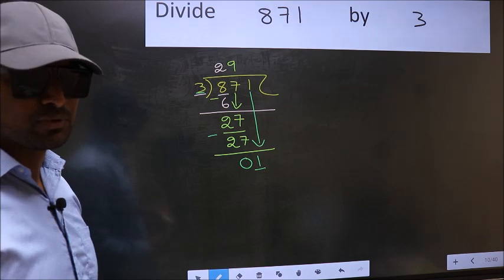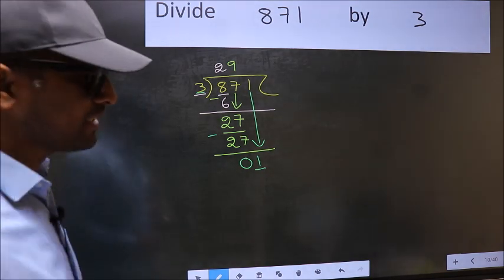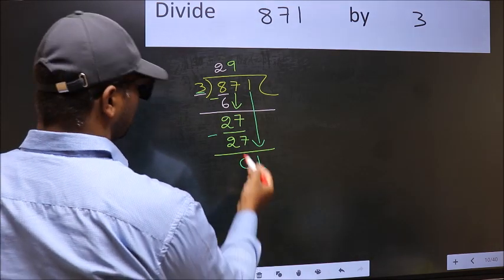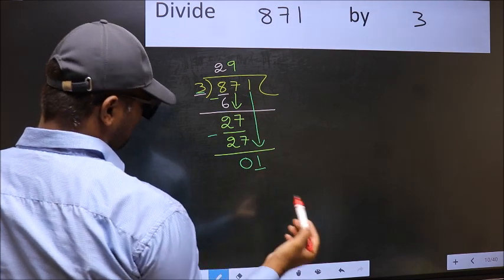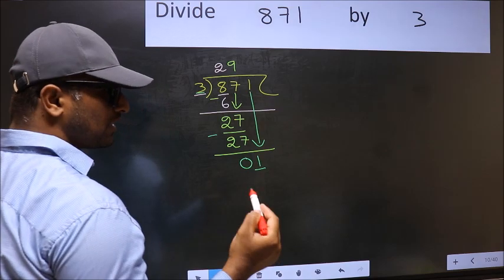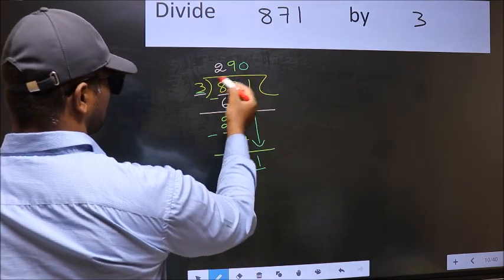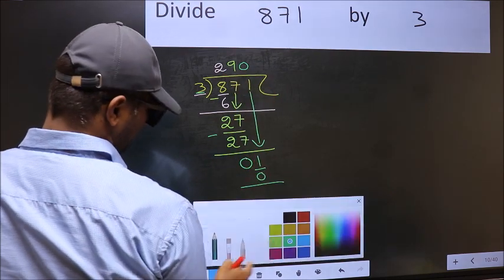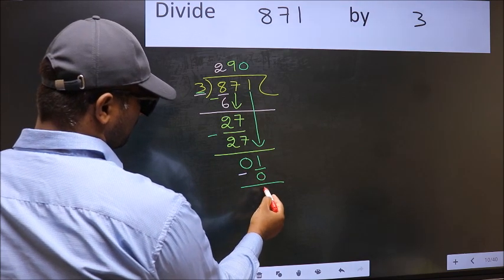Instead, what you should think of doing is, what number should we write here? If I take 1 here, I will get 3, but 3 is larger than 1. So what we should do is we should take 0. So 3×0=0. Now you should subtract. 1 minus 0 is 1.